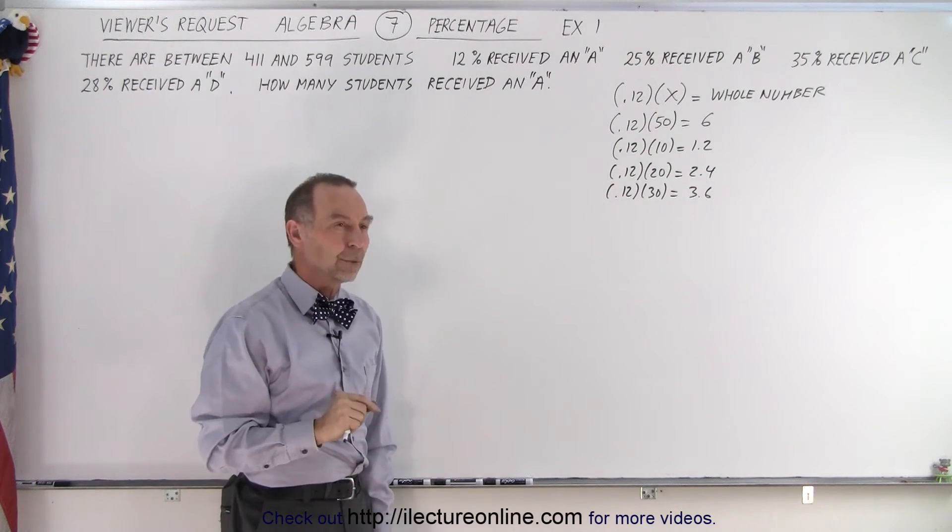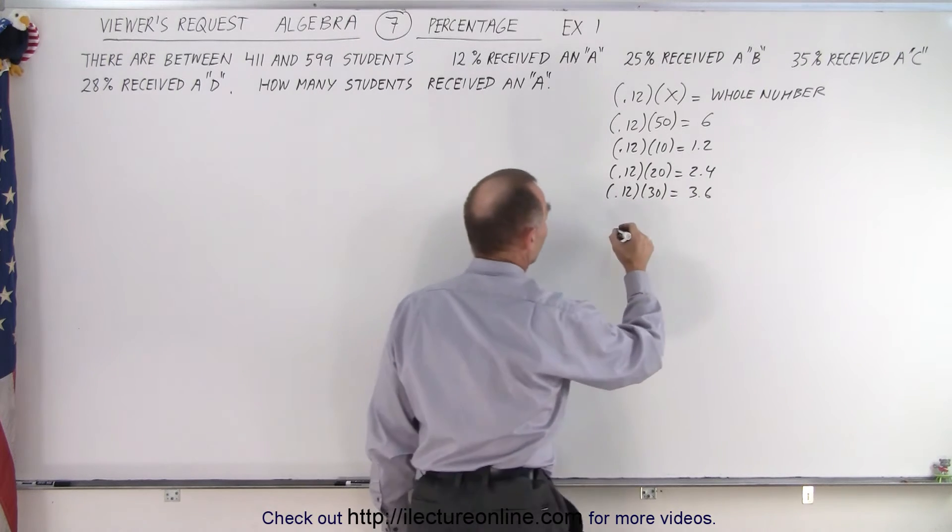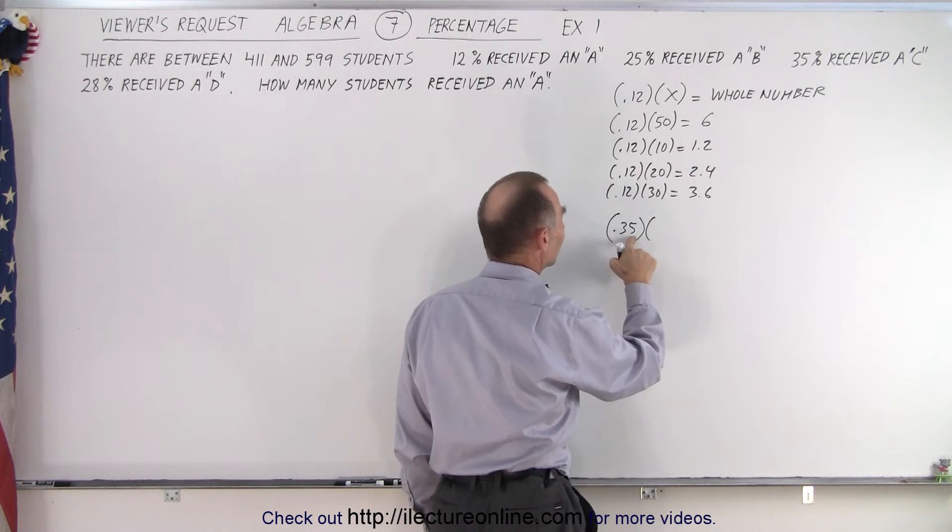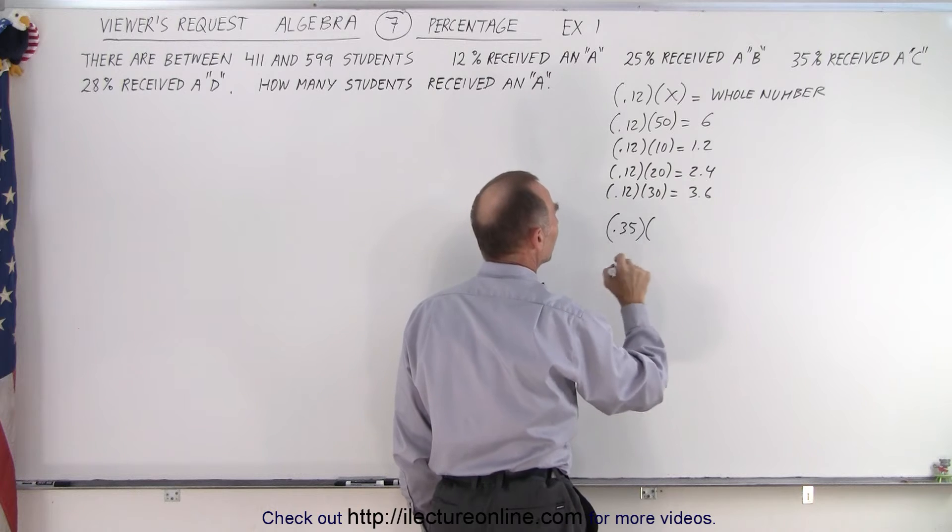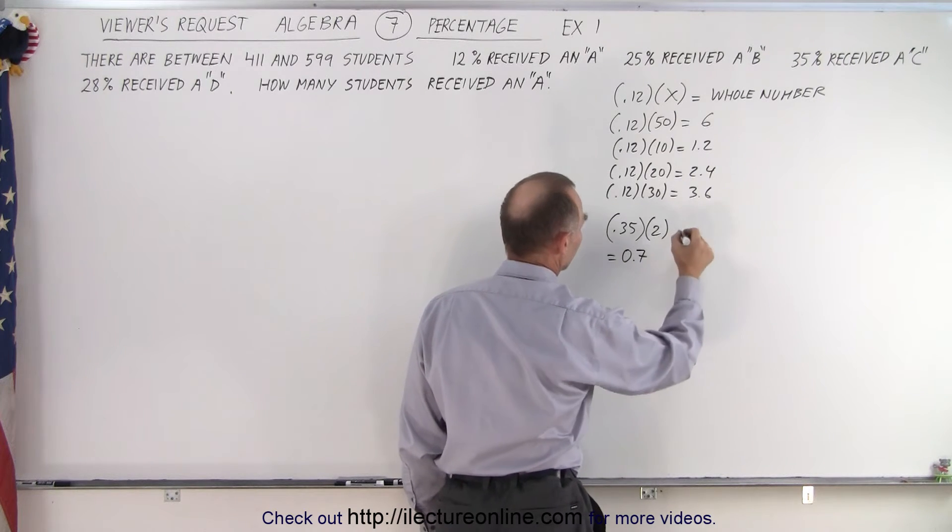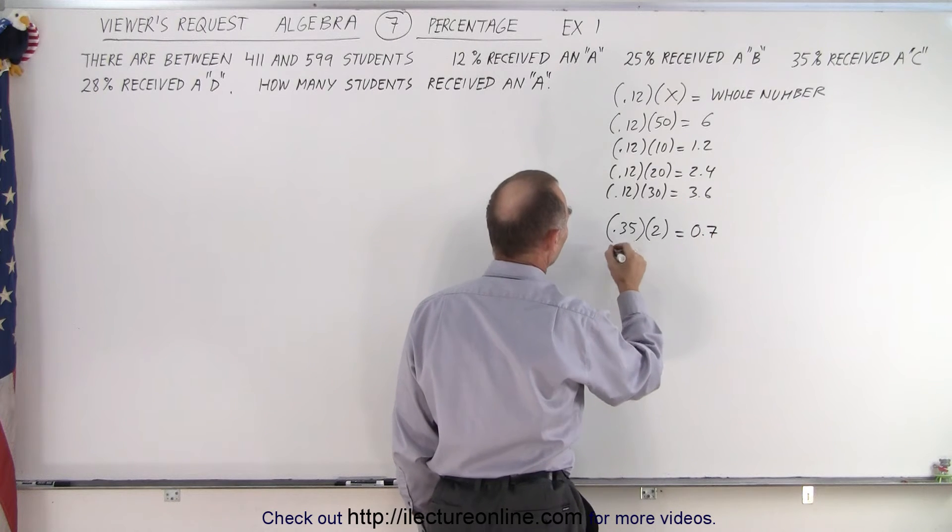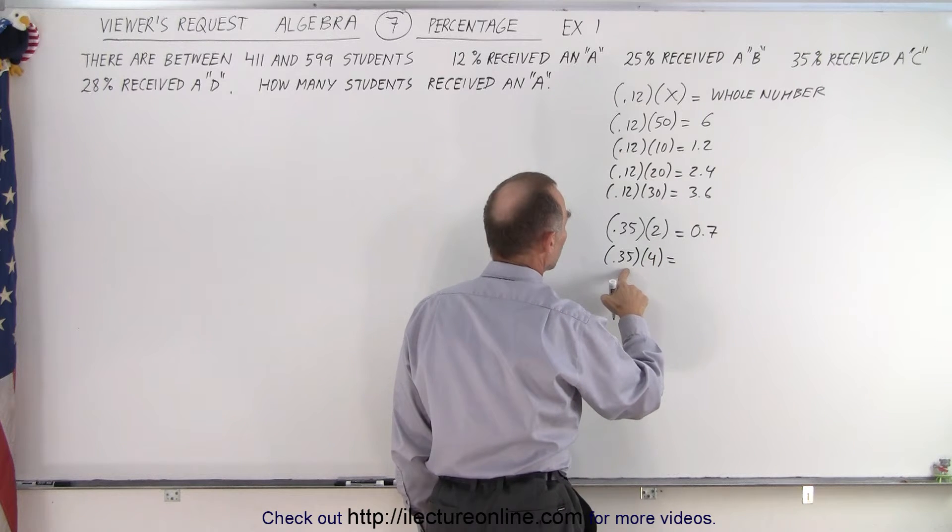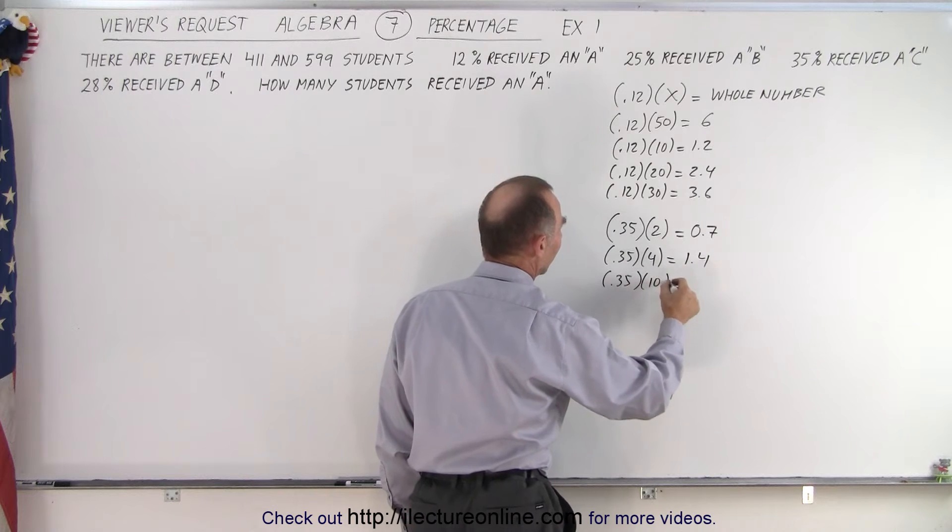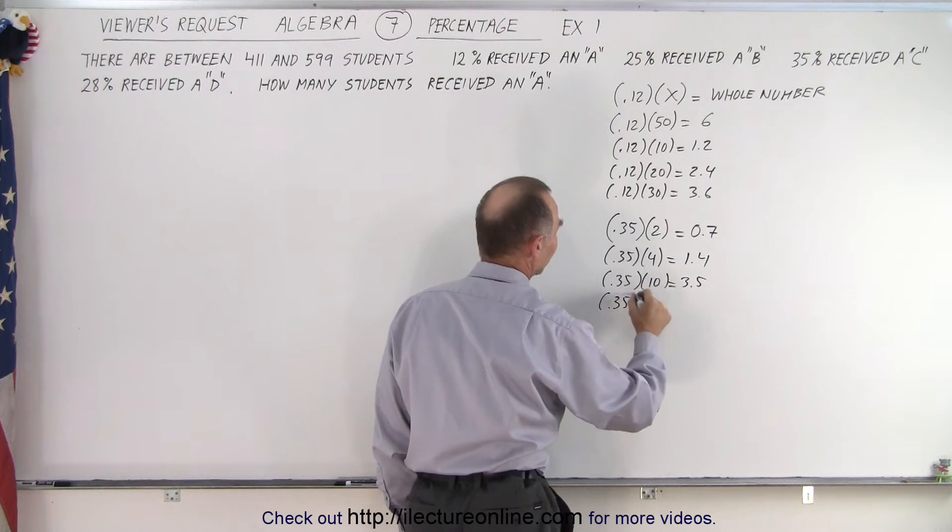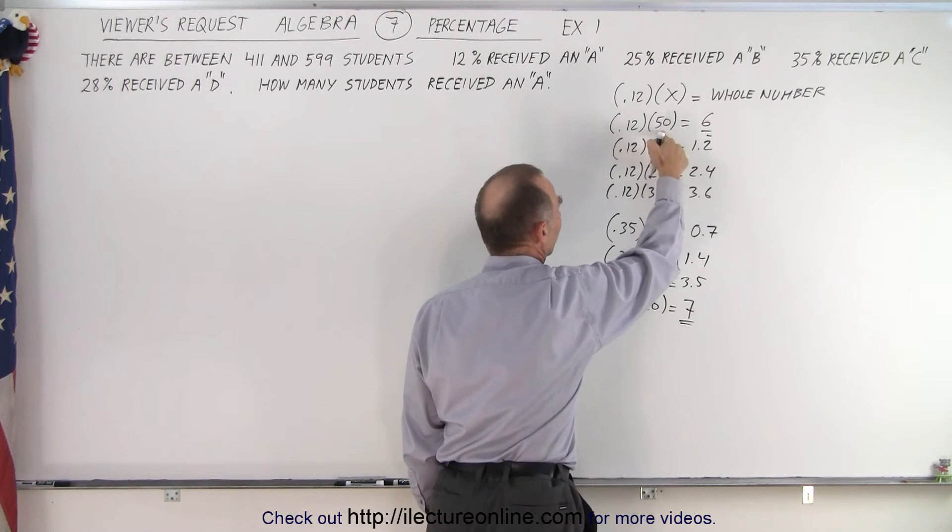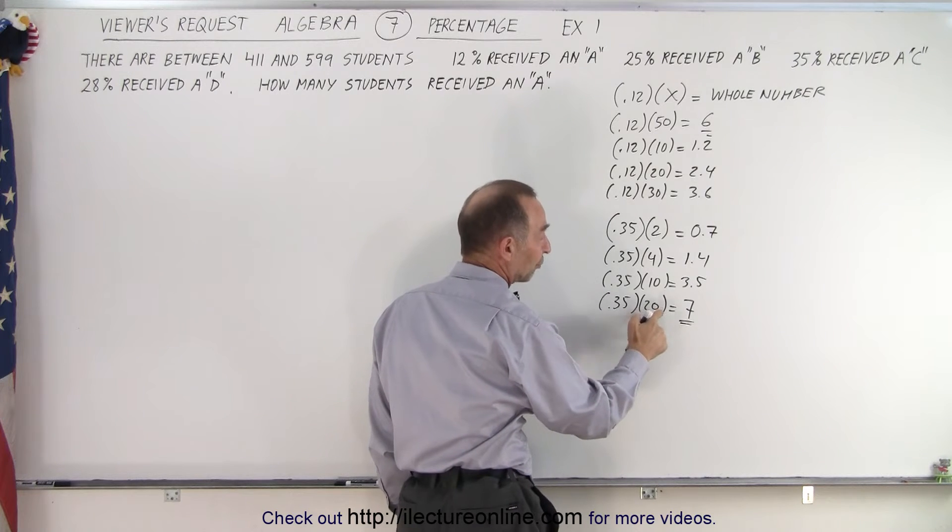How about 35%? What number do you need to multiply times 35% to get a whole number? So 0.35 times, let's see here. To get rid of the 5, you need a 2. 2 times 5 gives you 10, but that doesn't get rid of the decimal place. If I multiply times 2, that gives me 0.7. So 0.35 times 4 gives me 1.4. 0.35 times 10, that gives me 3.5. And so I can see that 0.35 times 20 gives me 7, which again is a whole number. So you can see that 0.12 must be multiplied by at least 50 or 100 or 150, but 0.35 must be multiplied times 20 or 40 or 60 or 80 or so forth.